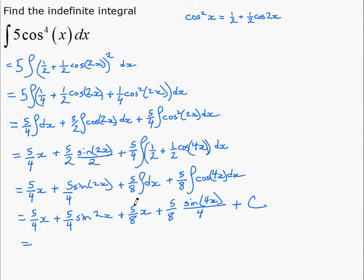5 over 4x and 5 over 8x can go together. Sine 2x and sine 4x have different arguments so we can't simplify those without trig identities. So we'll leave those. And get the final answer of 15 over 8x plus 5 over 4 sine of 2x plus 5 over 32 sine of 4x plus a constant.